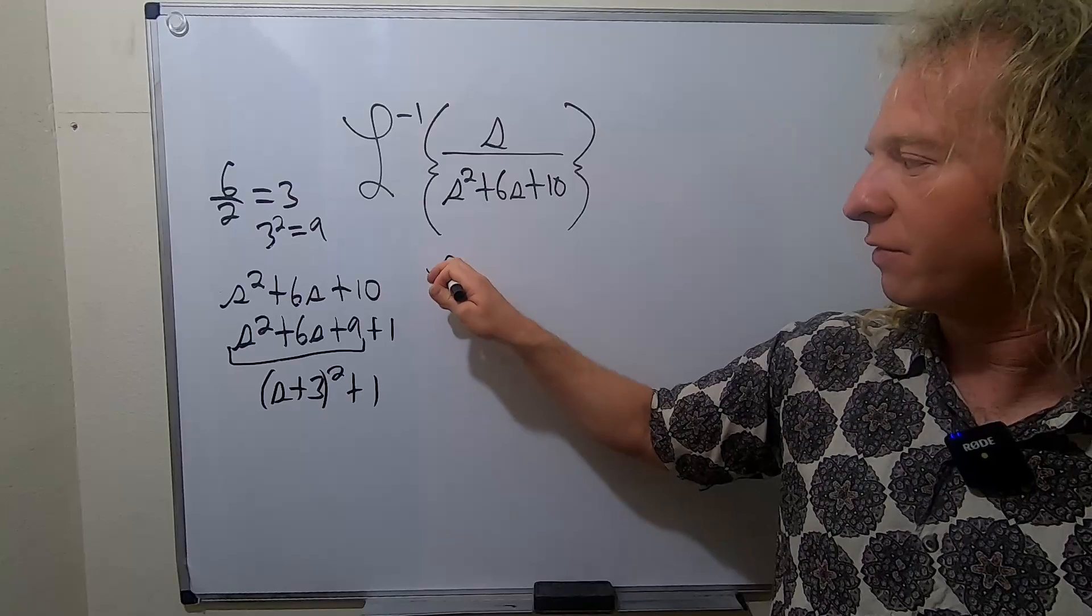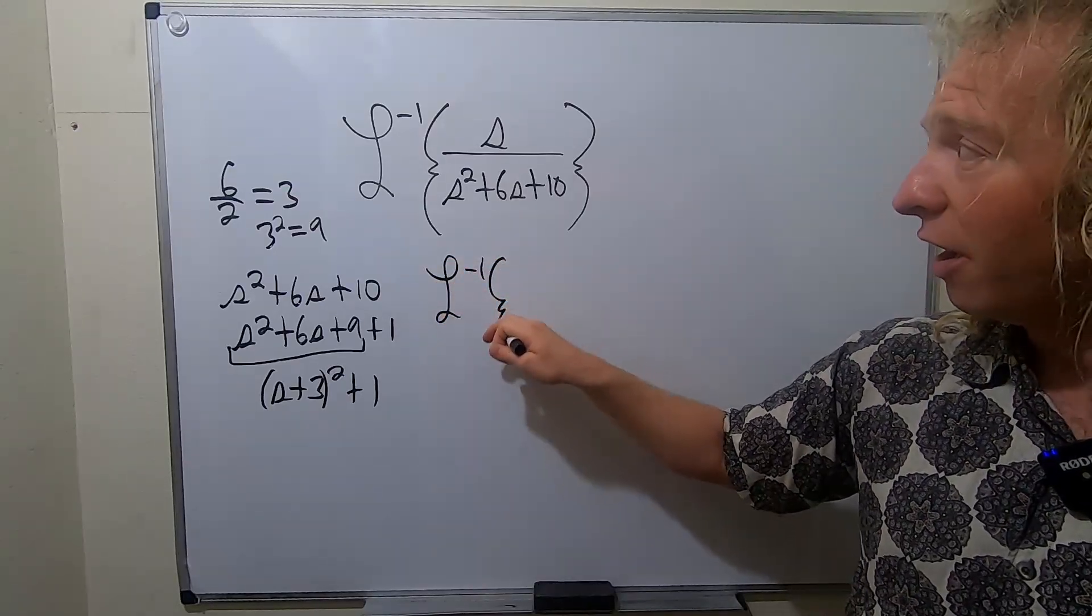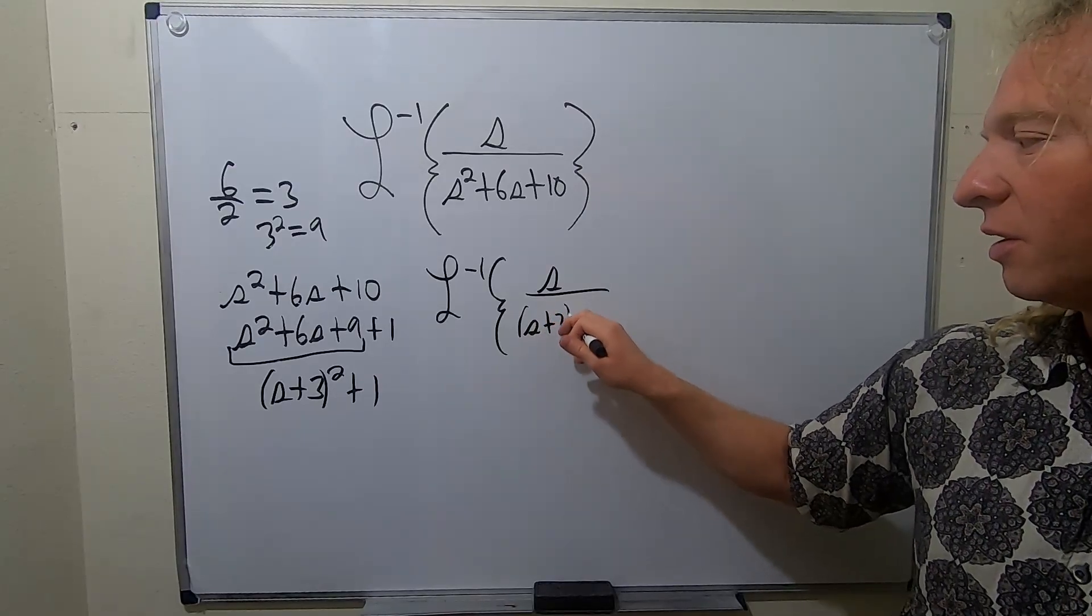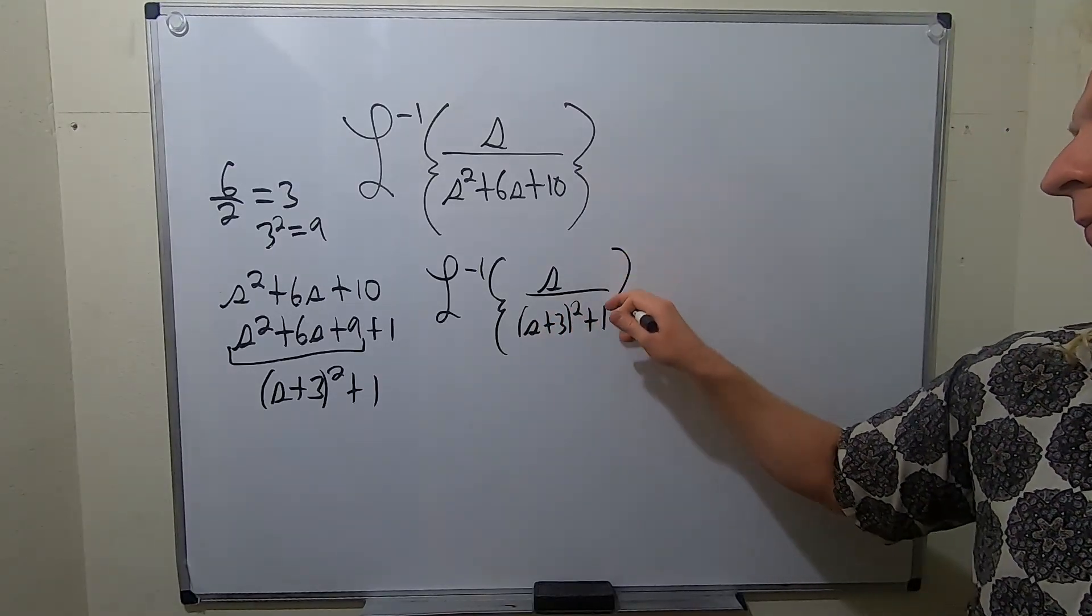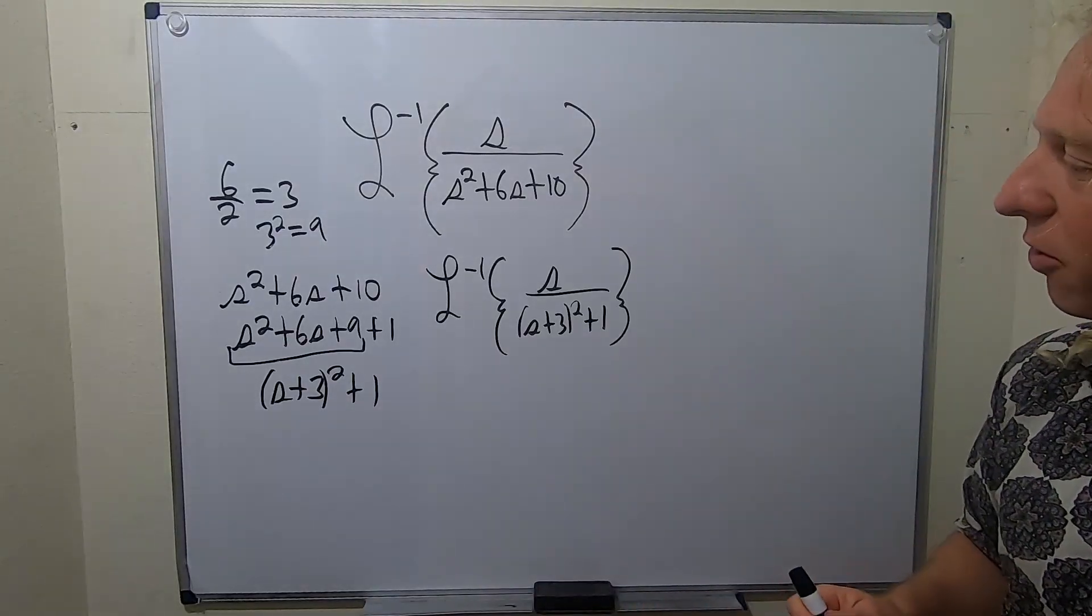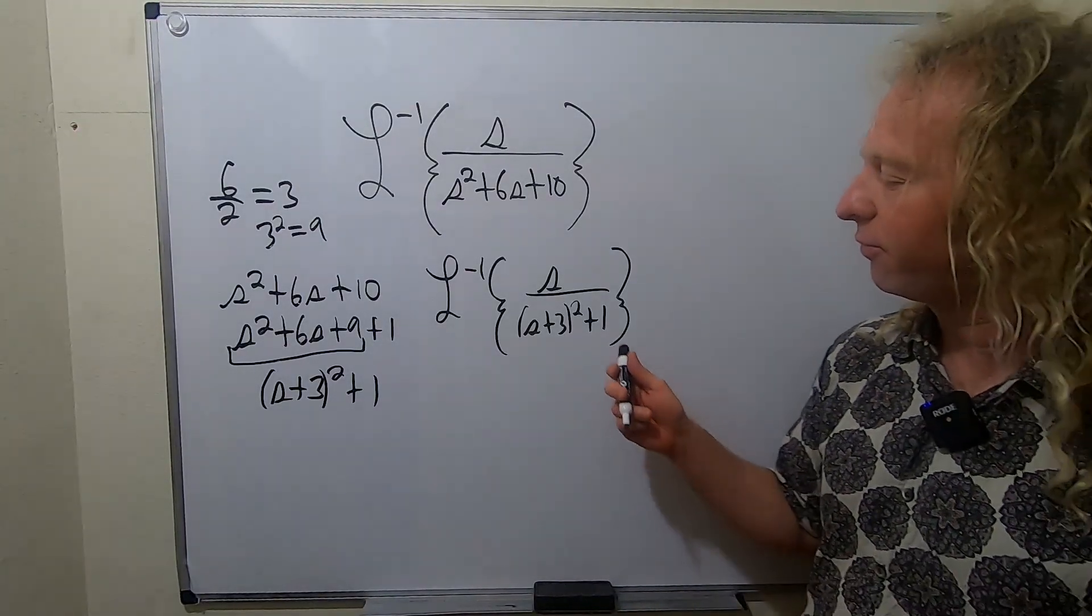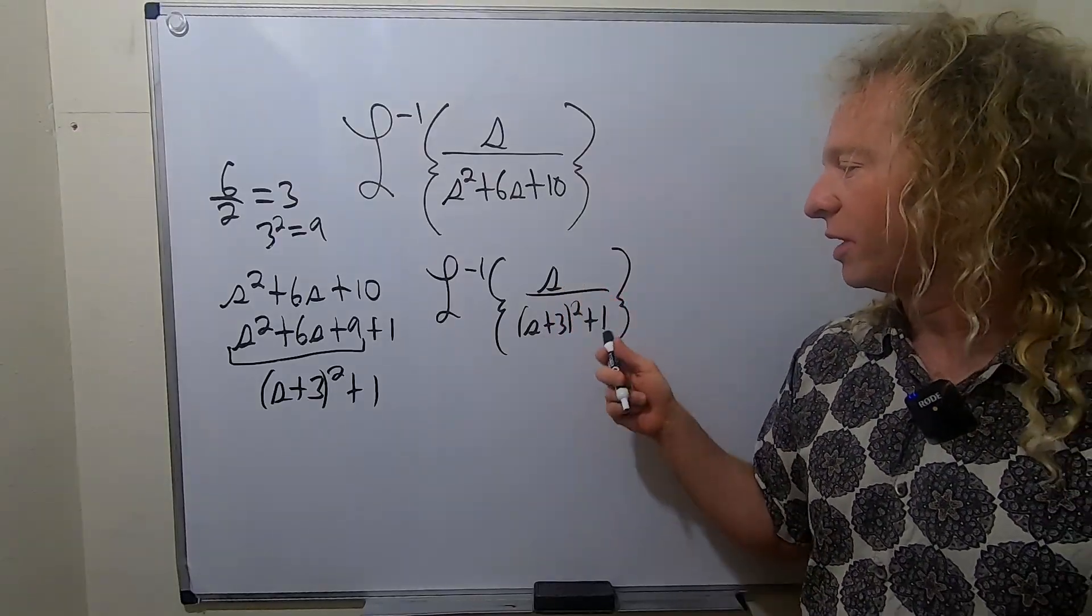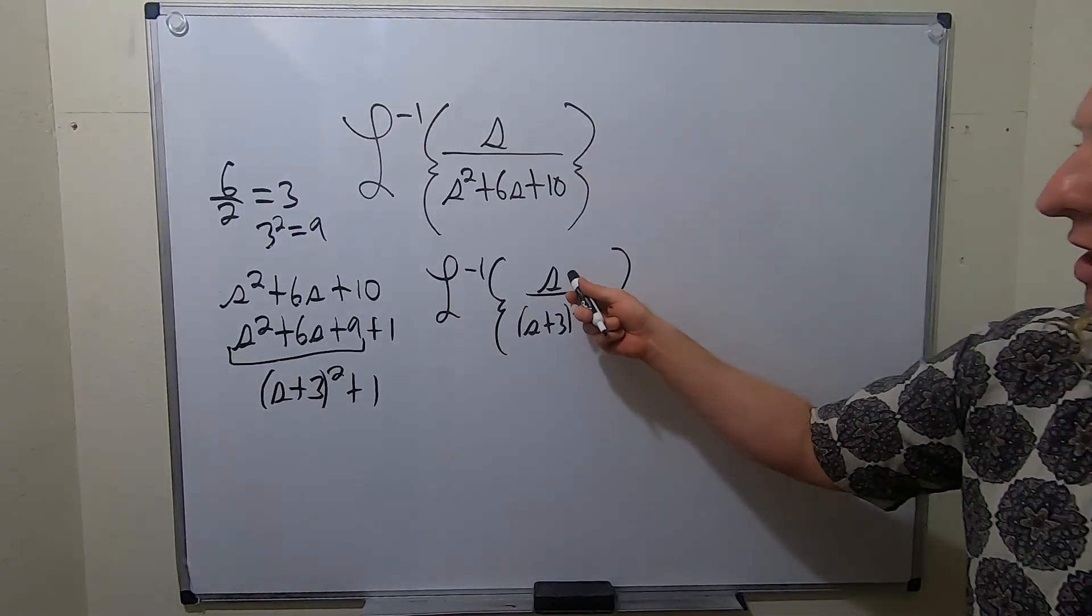All right, let's go ahead and rewrite this. So this is the inverse Laplace of s over, and then we have s plus 3 squared plus 1. So just rewriting the denominator like that. So it would be really nice if we could make this an s. The problem is this is an s already. So the idea is you want to make this an s plus 3.